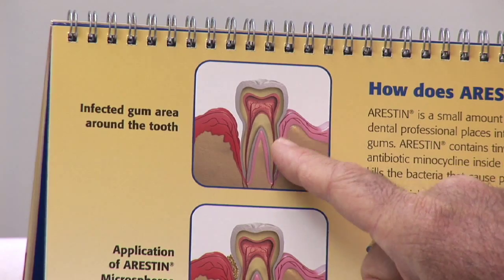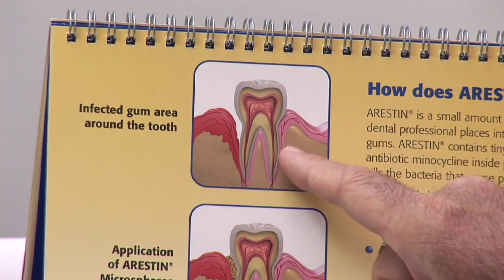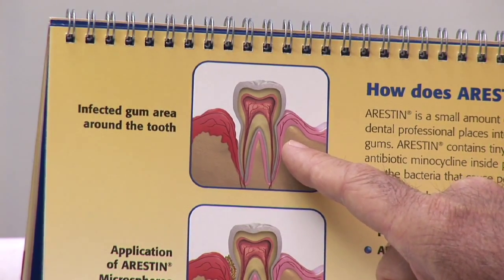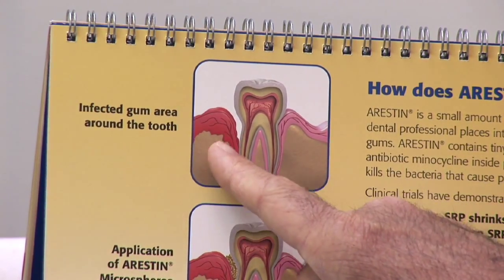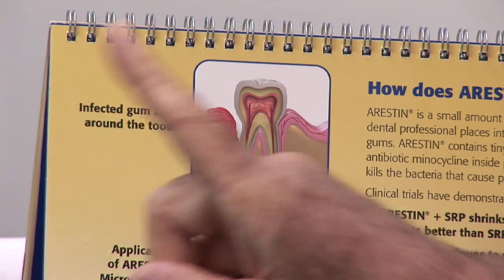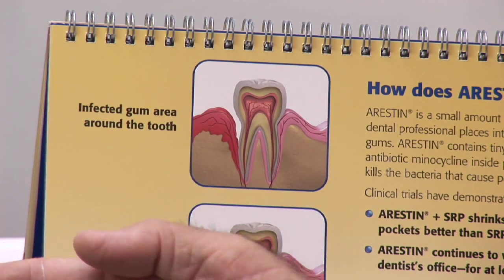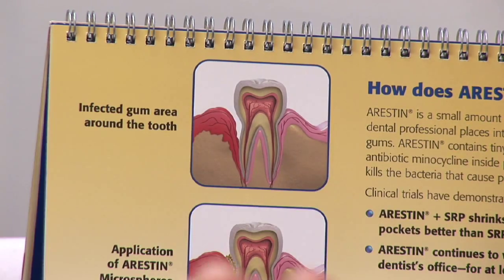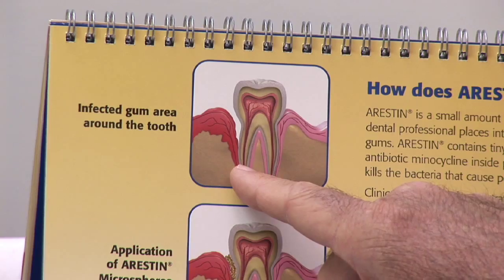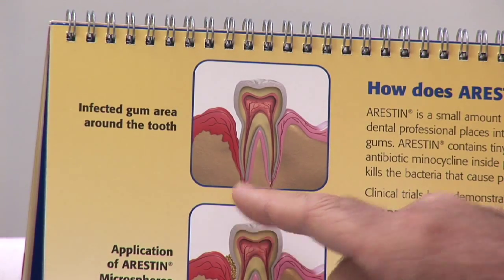Here you can see on this side the healthy attachment of the gum to the tooth. On the other side, the gum has actually become very inflamed, very red, and separated away from the root.